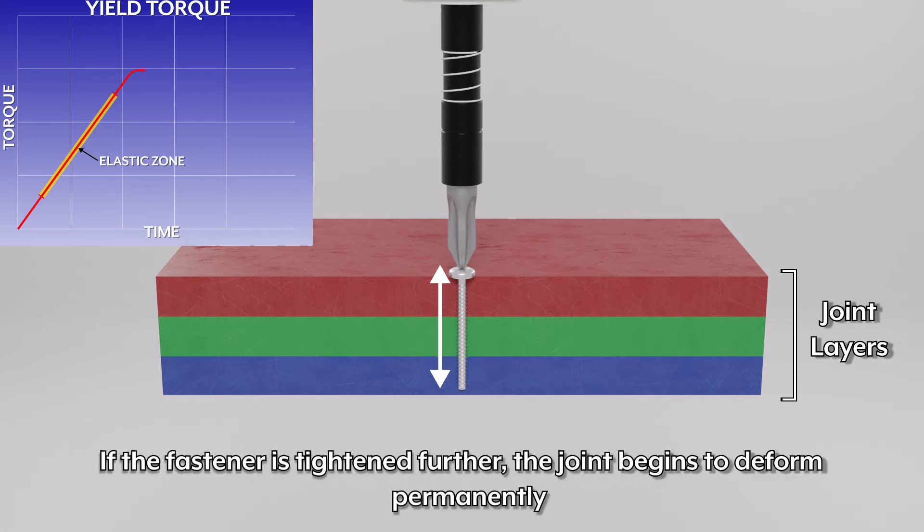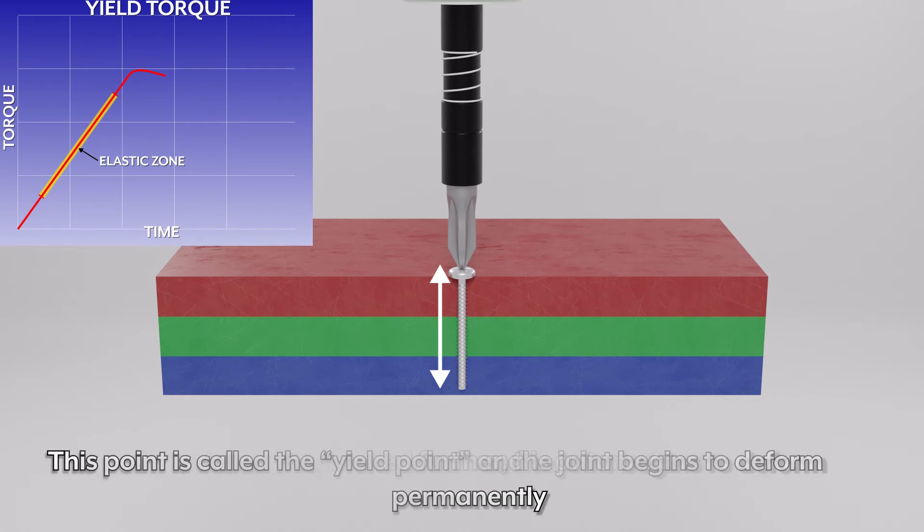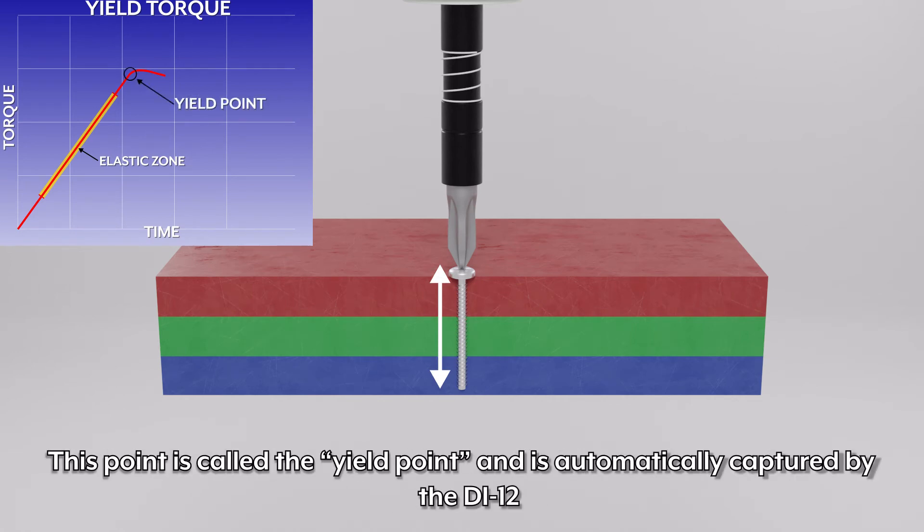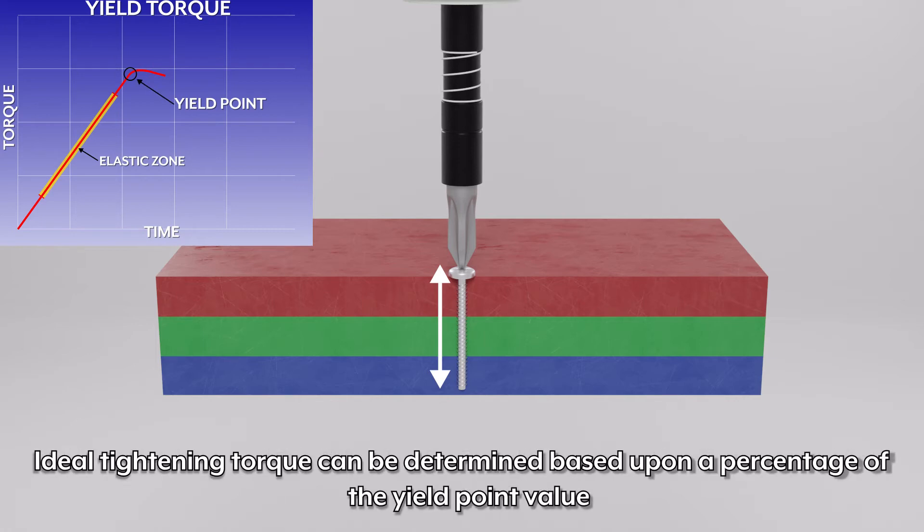If the fastener is tightened further, the joint begins to deform permanently. This point is called the yield point and is automatically captured by the DI-12. Ideal tightening torque can be determined based upon a percentage of the yield point value.